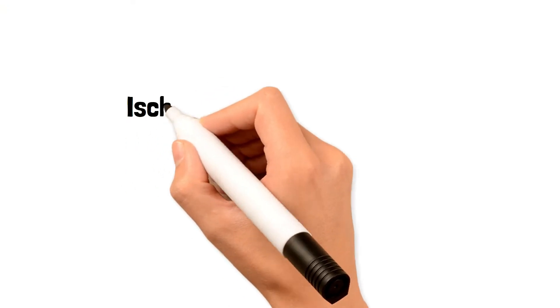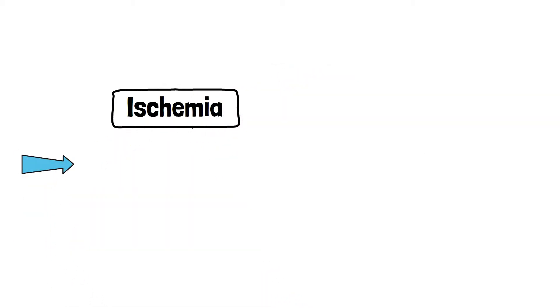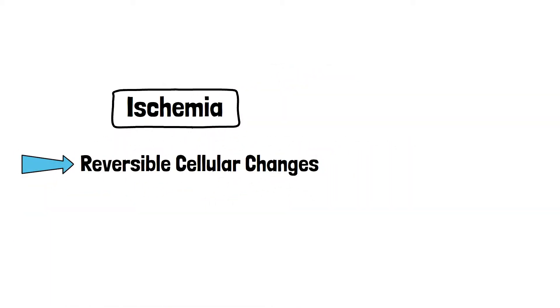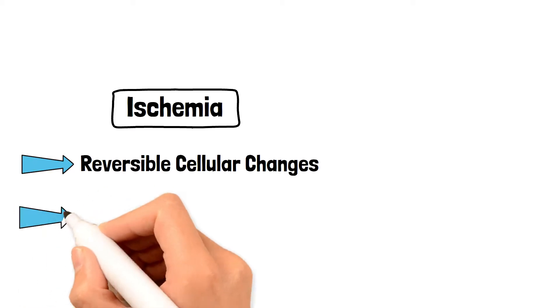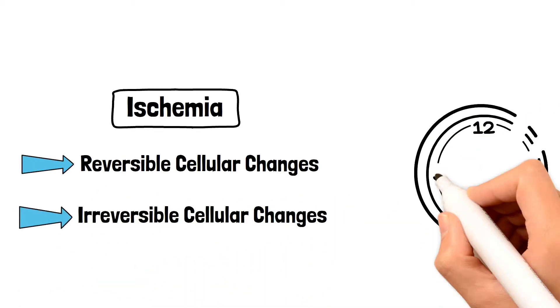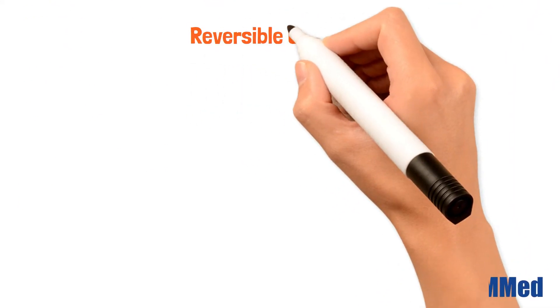In the setting of ischemia, there are numerous cellular changes that occur in the myocyte. They can be categorized as reversible cellular changes and irreversible cellular changes. These functional effects are felt immediately, within seconds. Let's talk about the reversible changes.